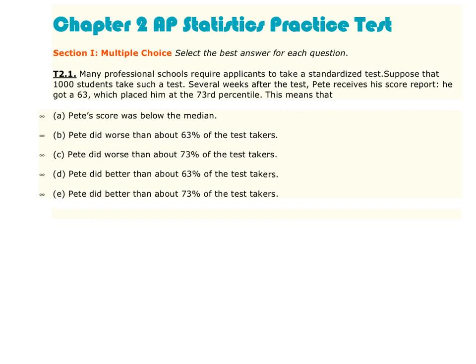For the Chapter 2 review, here's question 1. Many professional schools require applicants to take a standardized test. Suppose that 1,000 students take such a test. Several weeks after the test, Pete receives his score report. He got a 63, which placed him at the 73rd percentile. This means what? All you need to do is apply the definition of percentile, and in this case the correct answer is letter E. Your percentile is the percent of people you did better than, basically.